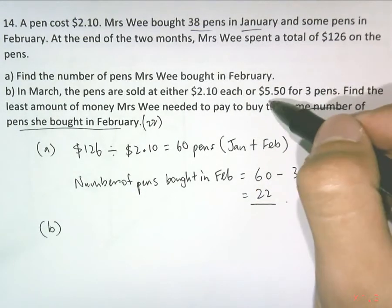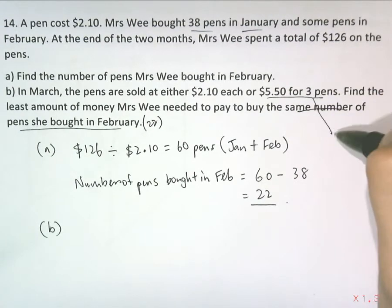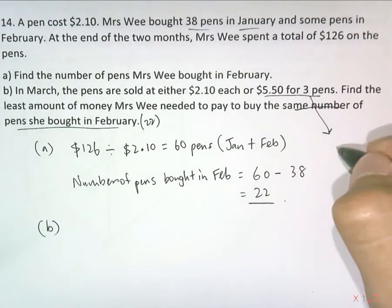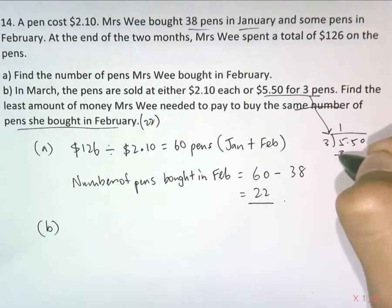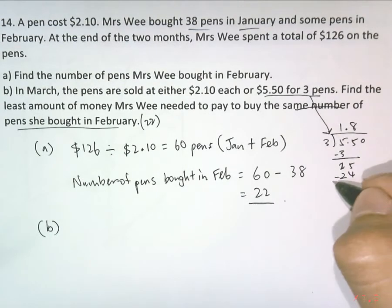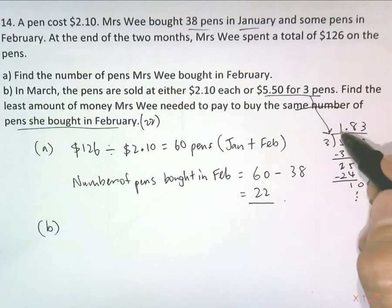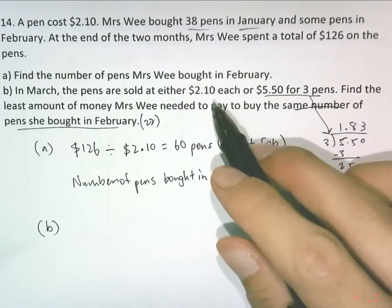Notice that we want the least amount, meaning the cheaper option. To check, $5.50 for three pens — doing a simple division, $5.50 divided by three — you'll see that per pen it's approximately $1.83. Since this is a recurring decimal, on average each pen is $1.83, which is cheaper than $2.10.